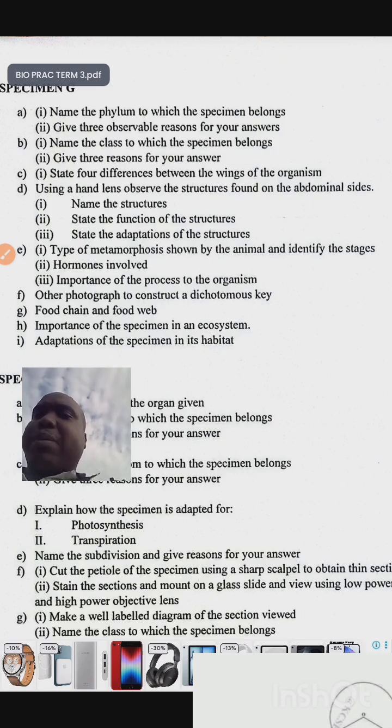Or you might be provided with other organisms of the similar class, then you might be asked to construct a simple dichotomous key, then the food chain and food web. Then state the importance of the specimen in the ecosystem, adaptation of the specimen in its habitat.